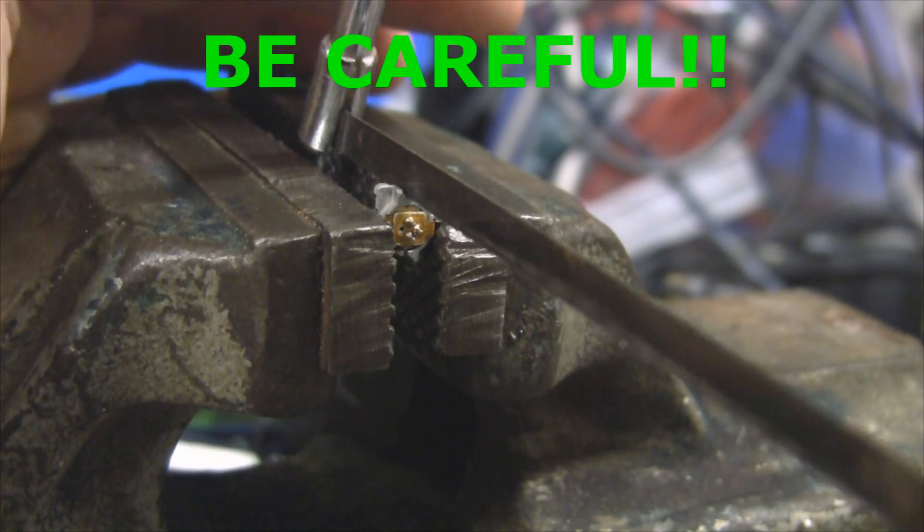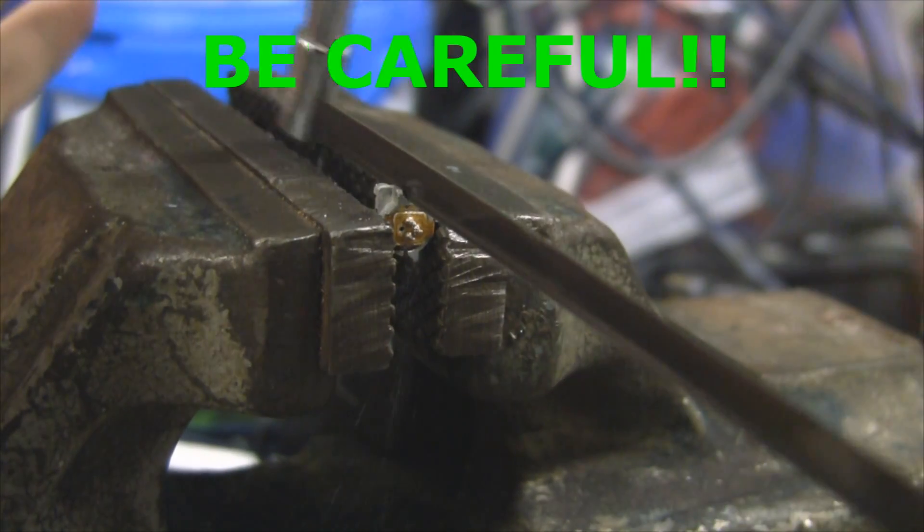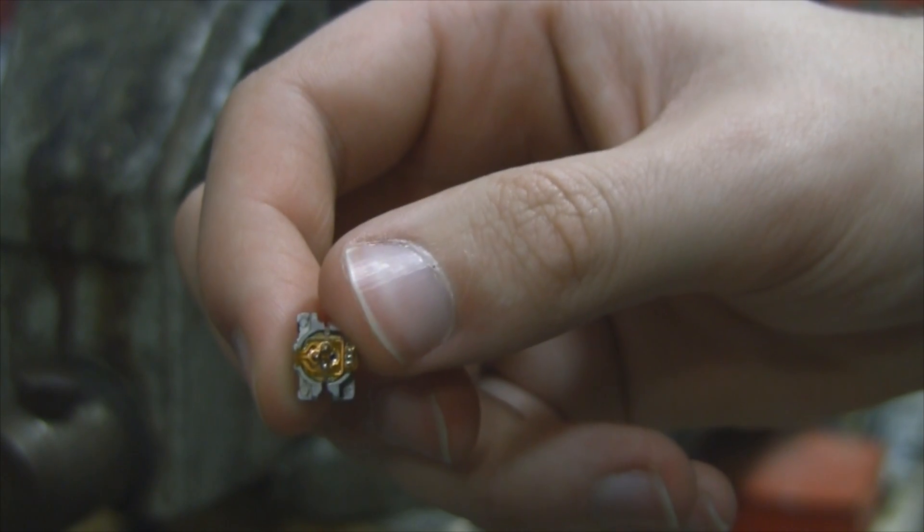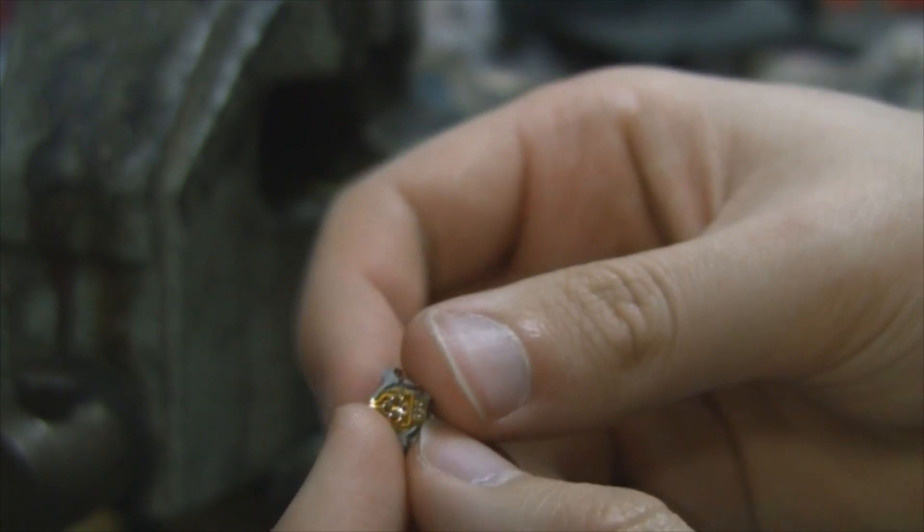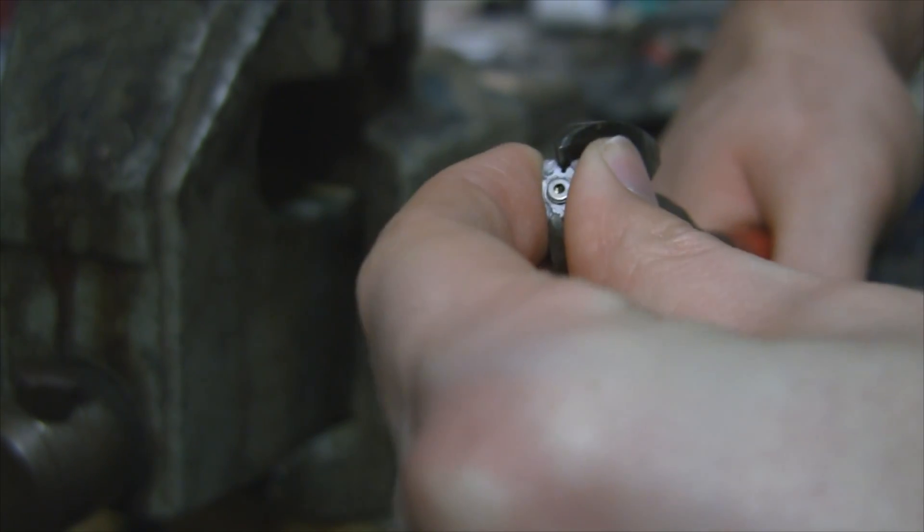But if you've got a big heatsink like this, you want to be very careful and use a junior hacksaw as I'm using and slightly saw down. Don't saw into the diode whatever you do. You don't want to damage this diode. So you saw down into the heatsink till you've got just enough space.